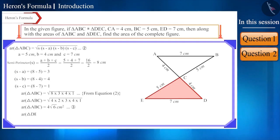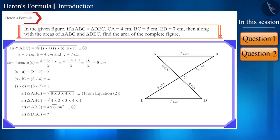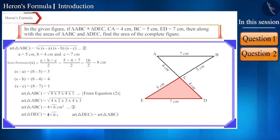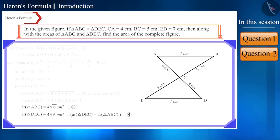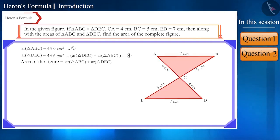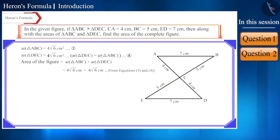Can you now find the area of triangle DEC? Will we use Heron's formula again? No — since triangle ABC and triangle DEC are congruent triangles, and the areas of congruent triangles are equal, the area of triangle DEC is also 4√6 cm². The question isn't finished yet — we still need the area of the complete figure, which equals the sum of the areas of triangle ABC and triangle DEC. So the total area is 8√6 cm².